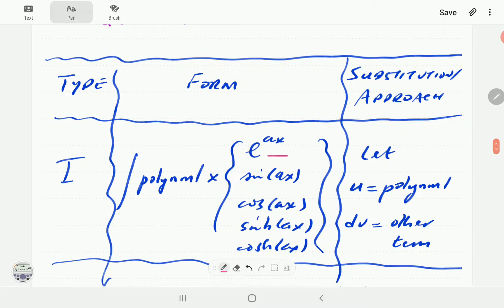The first type is integrals which involve a polynomial times any one of these forms: either an exponential of a constant times x, sine of a constant times x, cosine of a constant times x, hyperbolic sine or cosine. Of course these two are catered for here because this can be written in terms of e. For instance hyperbolic cosine of ax is e^(ax) plus e^(-ax) all over 2, and this has already been taken care of here.